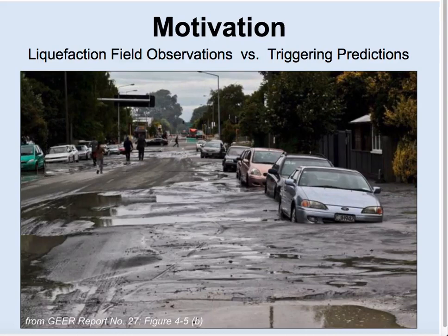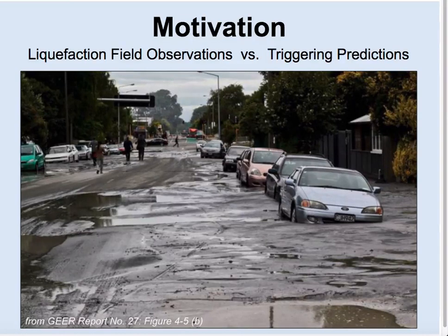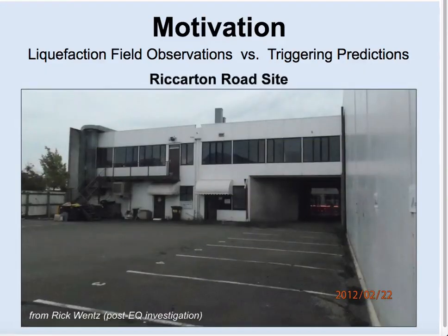During the 2010-2011 Canterbury earthquake sequence, liquefaction damage devastated the city of Christchurch, New Zealand. For many sites throughout Christchurch, state-of-practice methods indicated that liquefaction would be expected, and during post-earthquake reconnaissance, liquefaction was indeed observed. However, there were also many sites — predominantly silty soil sites — where state-of-practice methods indicated liquefaction would be expected, but during post-earthquake reconnaissance, no surface manifestations of liquefaction were observed. This discrepancy led to the development of the case histories being discussed today.